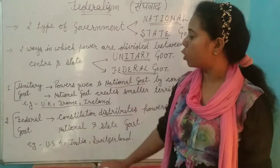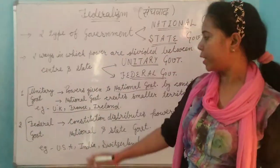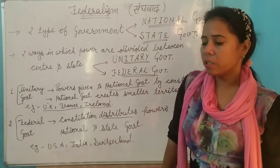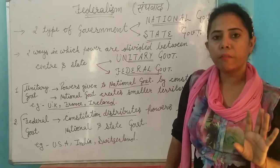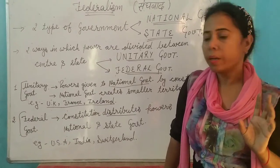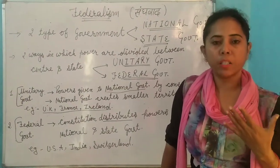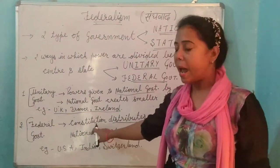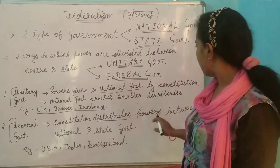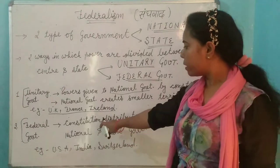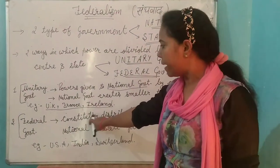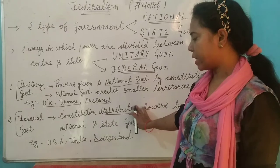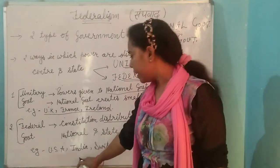Our today's main point: federal government. Federal government mein kya hota hai — it is the distribution of power between state government and national government, and it is in written form in our constitution. Constitution hi ek agreement hota hai in federal government, jahan par state aur national government ke andar powers ko divide kiya jaata hai. Iska example hai USA, India and Switzerland.